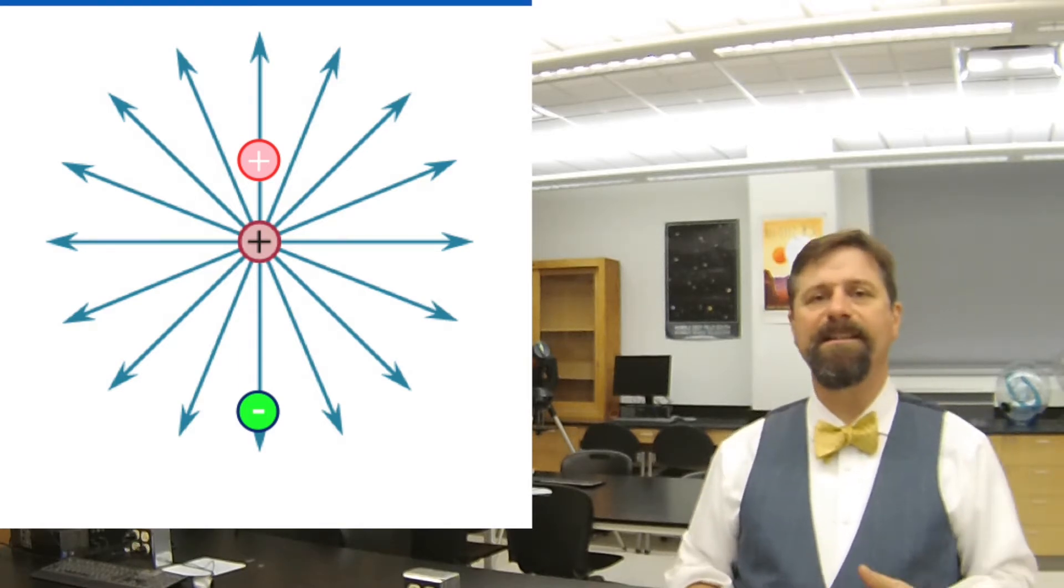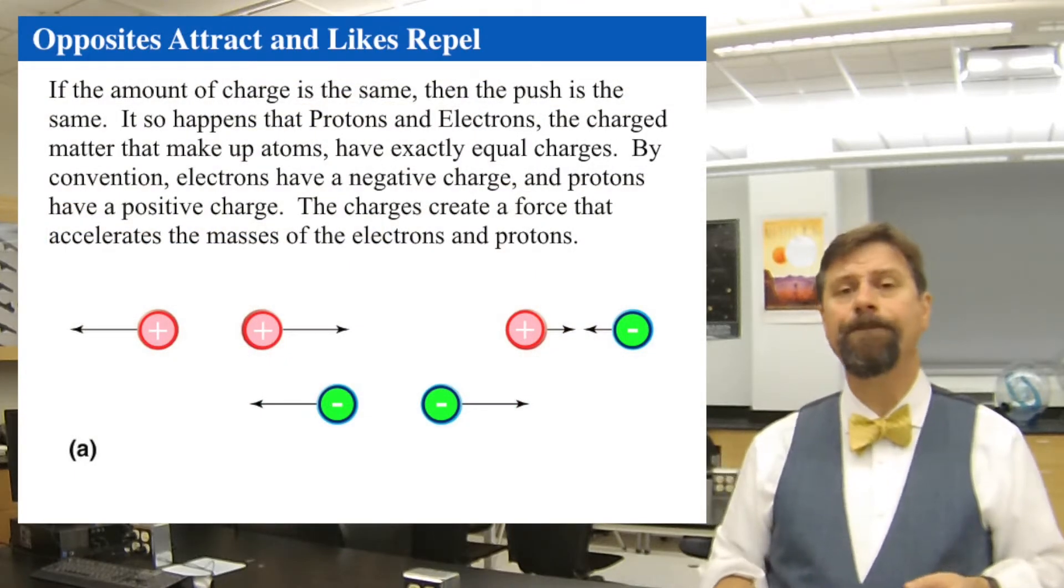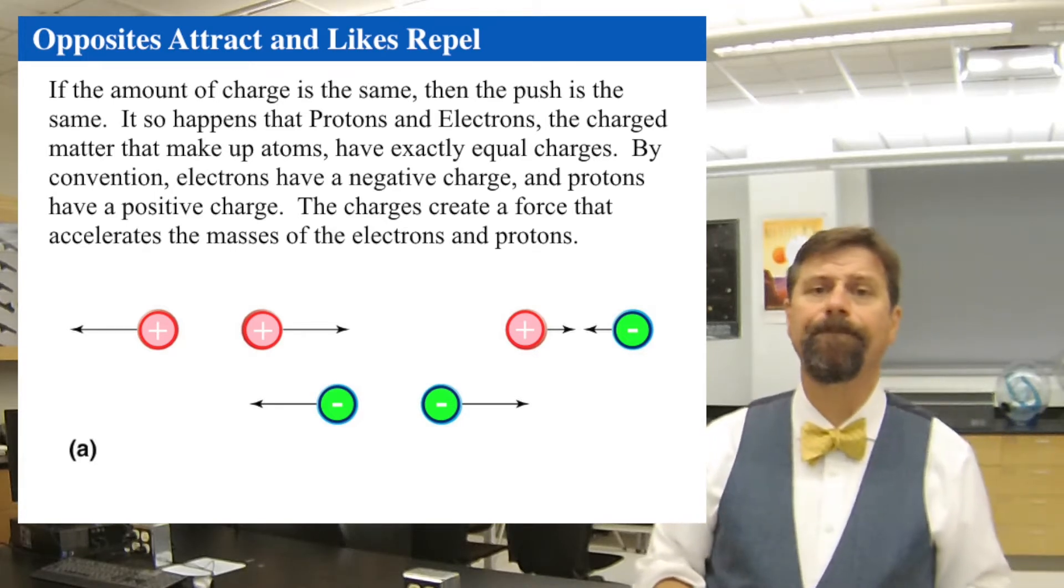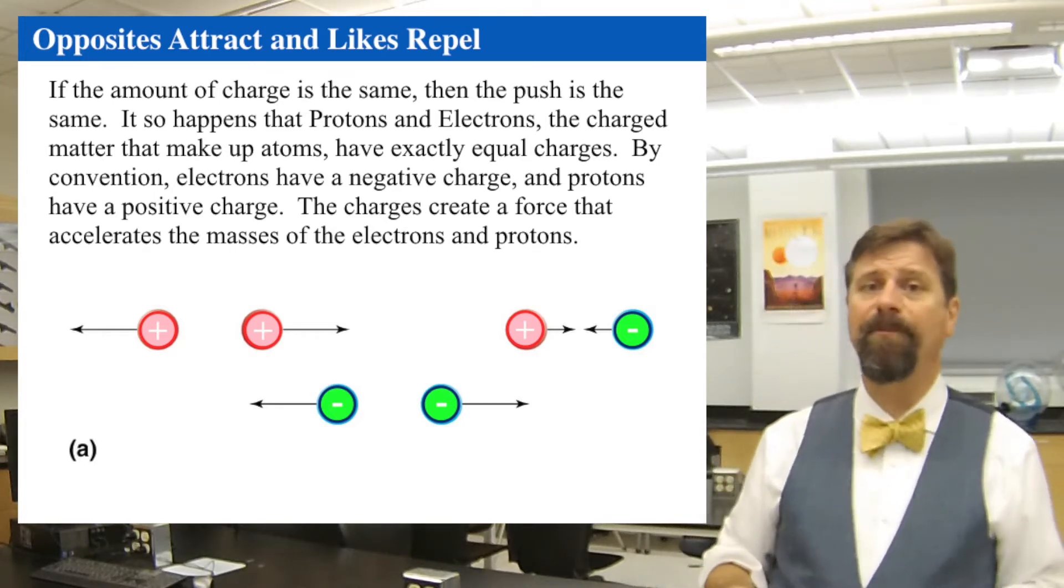But then the electron has the exact opposite charge, the same exact amount but exactly opposite sign. So two like charges, plus plus, will repel each other, and two opposite charges will attract each other. That's the nature of it. But what do we mean by charges and why do they repel each other? What's going on?